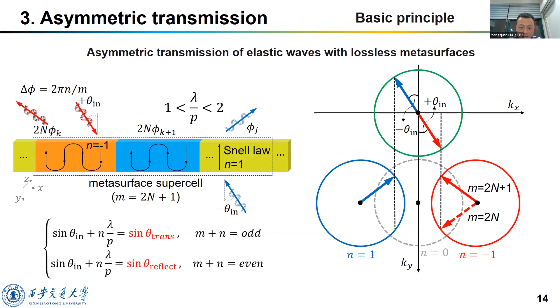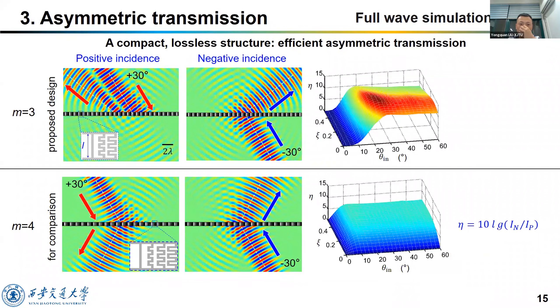Here is the full wave simulation result. As we can see, the waves from the positive side almost totally reflected. And the waves from the negative side almost totally transmitted to the other side. So we have achieved an efficient asymmetric transmission.